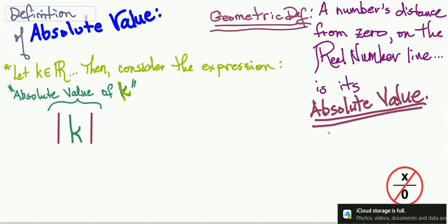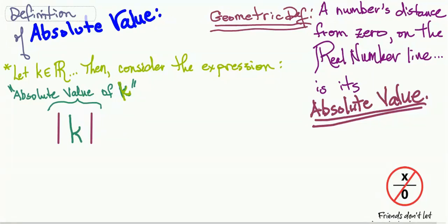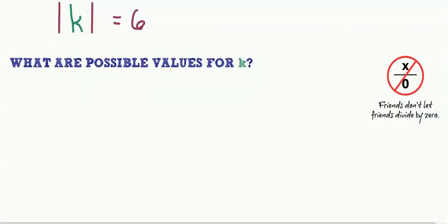Note this: distances cannot be negative. You always travel a positive number of miles when you drive your car. Even though you go back and forth to and from the store, you haven't untraveled any of the miles you've already traveled. Distance must be positive.